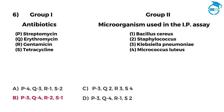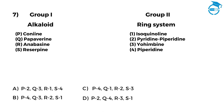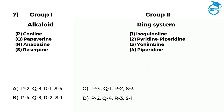Group 1: Alkaloid. Group 2: Ring System. P, Corneine — 1, Isoquinoline. Q, Papaverine — 2, Pyridine-Piperidine. R, Anabasine — 3, Yohimbine. S, Rhizapine — 4, Piperidine. Options: A: P2, Q3, R1, S4. B: P4, Q3, R2, S1. C: P4, Q1, R2, S3. D: P2, Q4, R3, S1. The right option is C, that is P4, Q1, R2, S3.